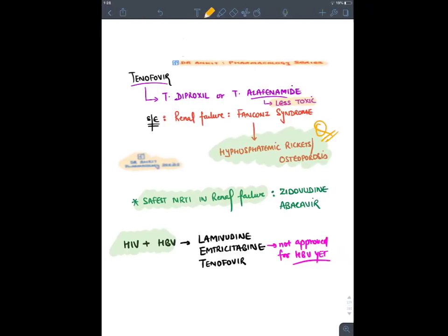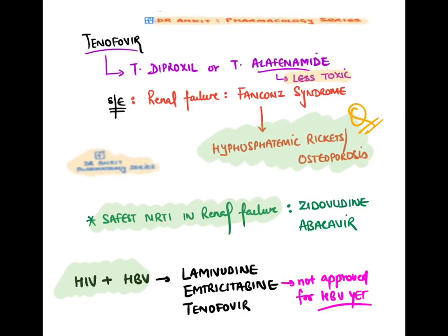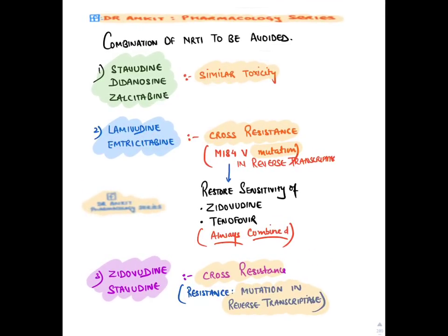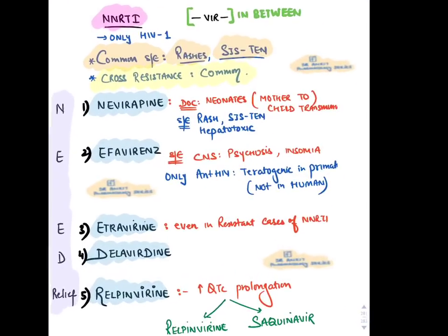Tenofovir (NtRTI): two forms — Tenofovir disoproxil and Tenofovir alafenamide (less toxic overall). Tenofovir causes Fanconi syndrome — PCT of kidney malfunctions, leading to phosphate loss, hypophosphatemic rickets, or osteoporosis. Safest NRTIs in renal failure: Zidovudine and Abacavir. NRTI combinations that should be avoided include Stavudine + Didanosine + Zalcitabine (due to similar toxicities) and Zidovudine + Stavudine (cross-resistance).